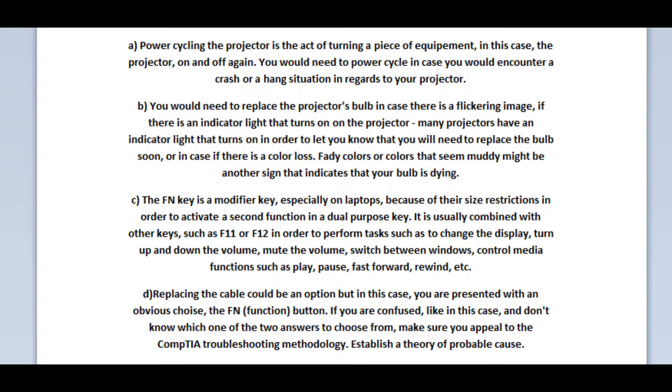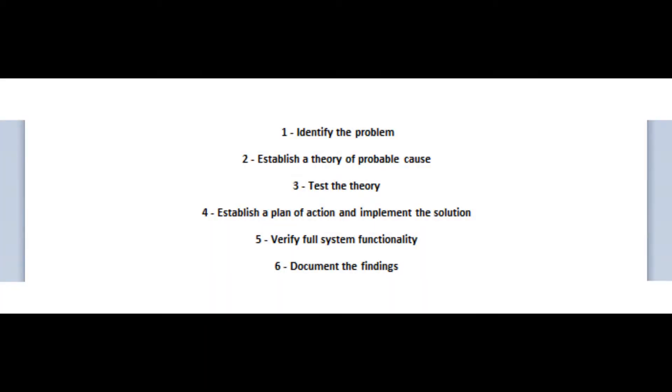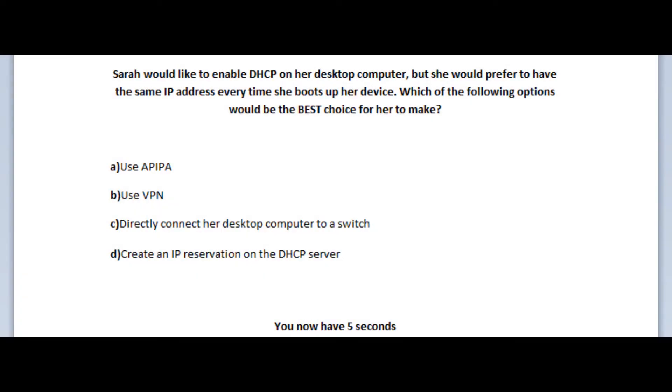Replacing the cable could be an option in this case, but you are presented with an obvious choice. The FN button. If you are confused like in this case and don't know which one of the two answers to choose from, make sure you appeal to the CompTIA troubleshooting methodology. What does the second step of the troubleshooting methodology state? To establish a theory of probable cause. But most important to question the obvious and in this case it's pretty easy, is it not?